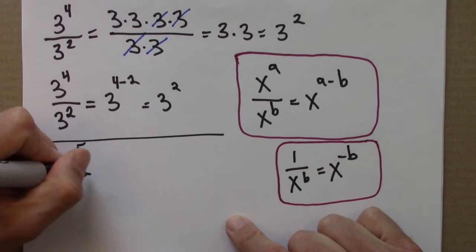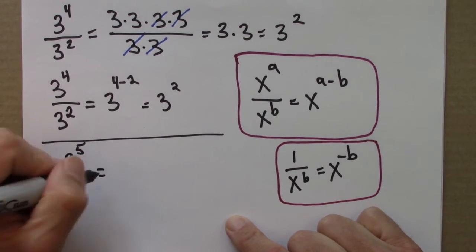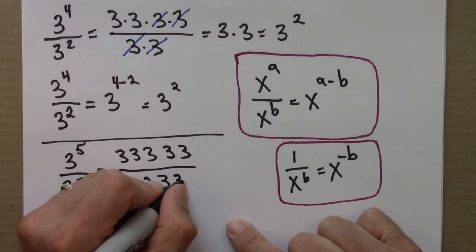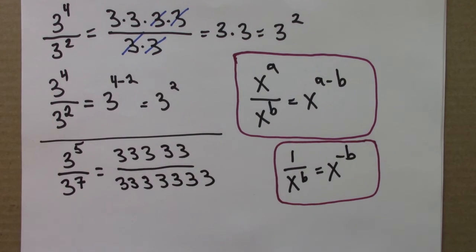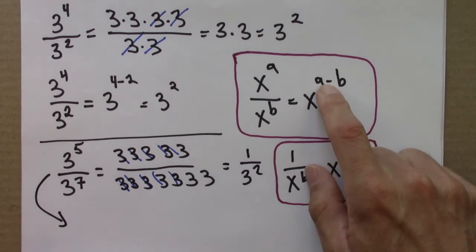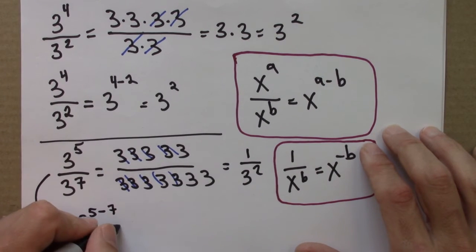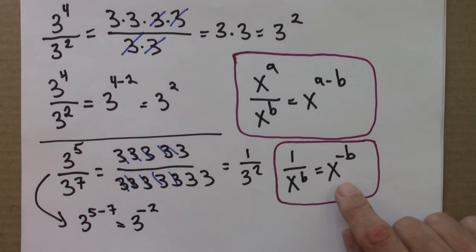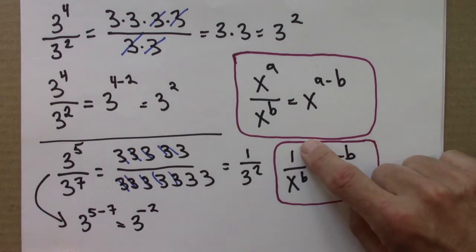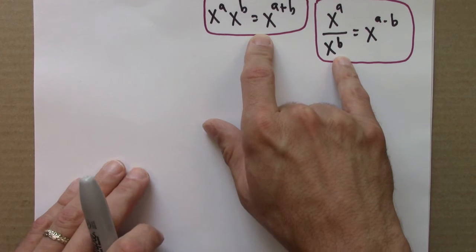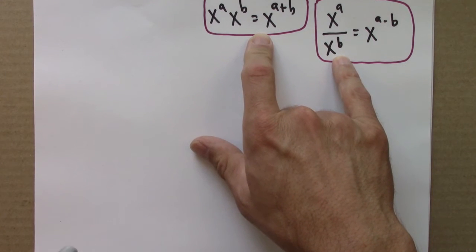Maybe one way is as follows. Suppose we have 3 to the 5 over 3 to the 7. So 5 cancel, and I'm left with 1 over 3 to the 2. But over here, if we use this rule, this would be 3 to the 5 minus 7, which is 3 to the minus 2. So there are a number of different ways to convince yourself that this makes sense. The bottom line is that a number raised to a negative exponent is the same as 1 over a number raised to that exponent.